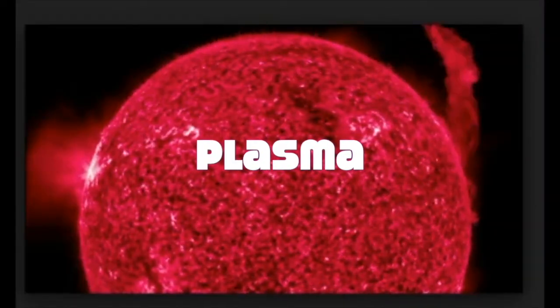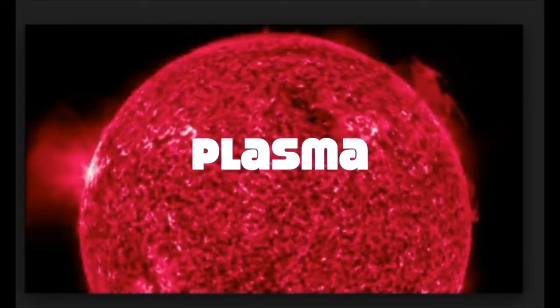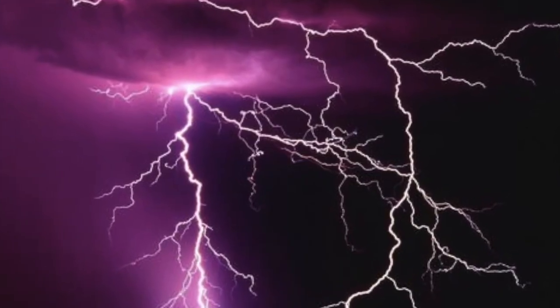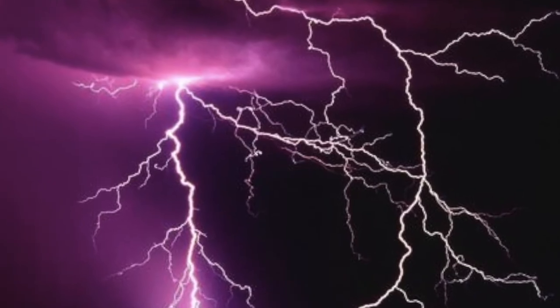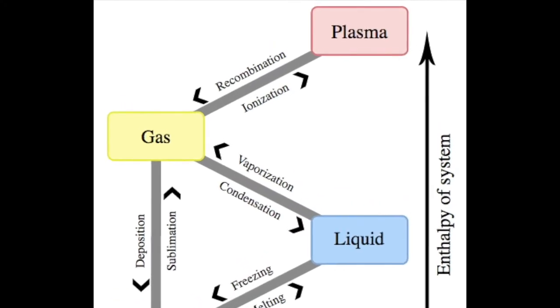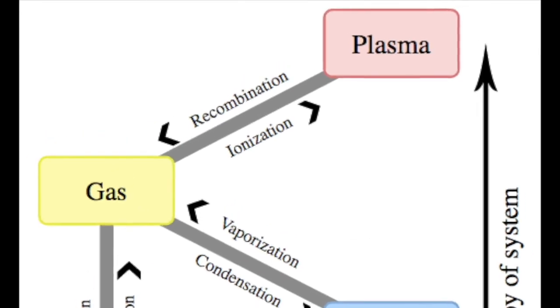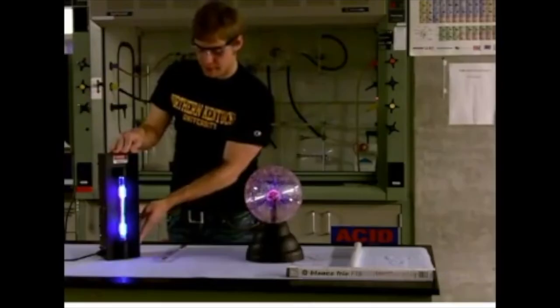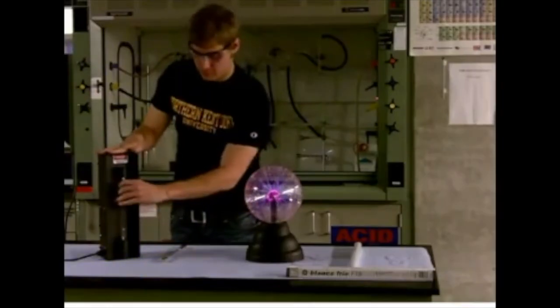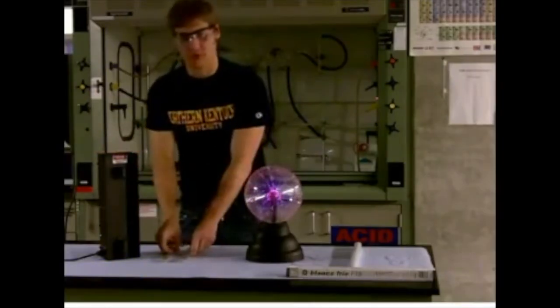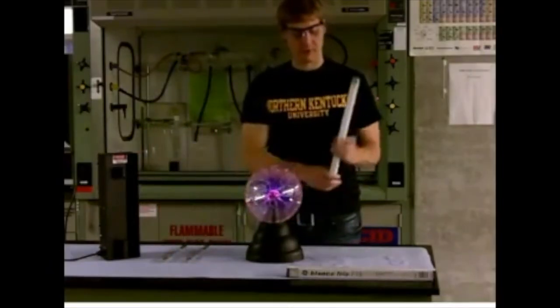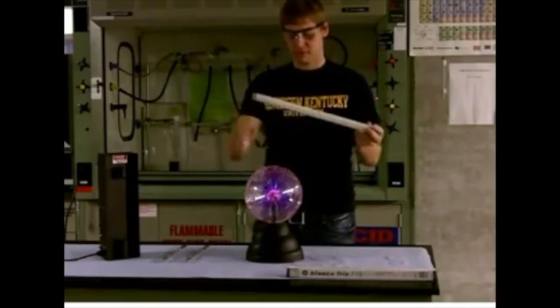The fourth kind of matter. Okay, so what about plasma? Gases can change into plasma and plasma into gases if the conditions are right. Ionization is when a gas changes into the plasma state. This happens when a substance gains so much energy that the electrons are freed from their atoms. So the gas becomes a mix of free electrons and ions, atoms with an electric charge, and we call this mixture plasma.